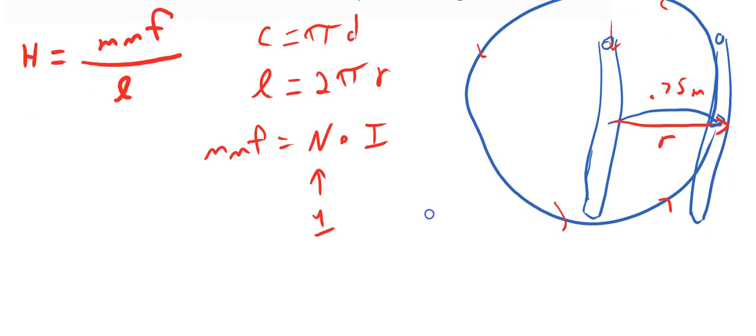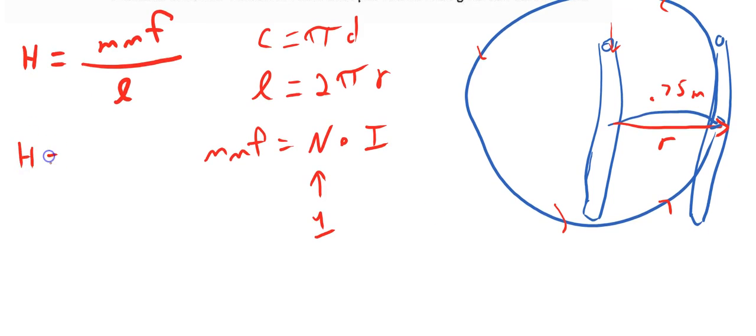And so from that we can say that the magnetizing force is equal to the MMF which we have concluded as simply the current divided by the length, which is 2 pi times the radius or the distance that we've been given.